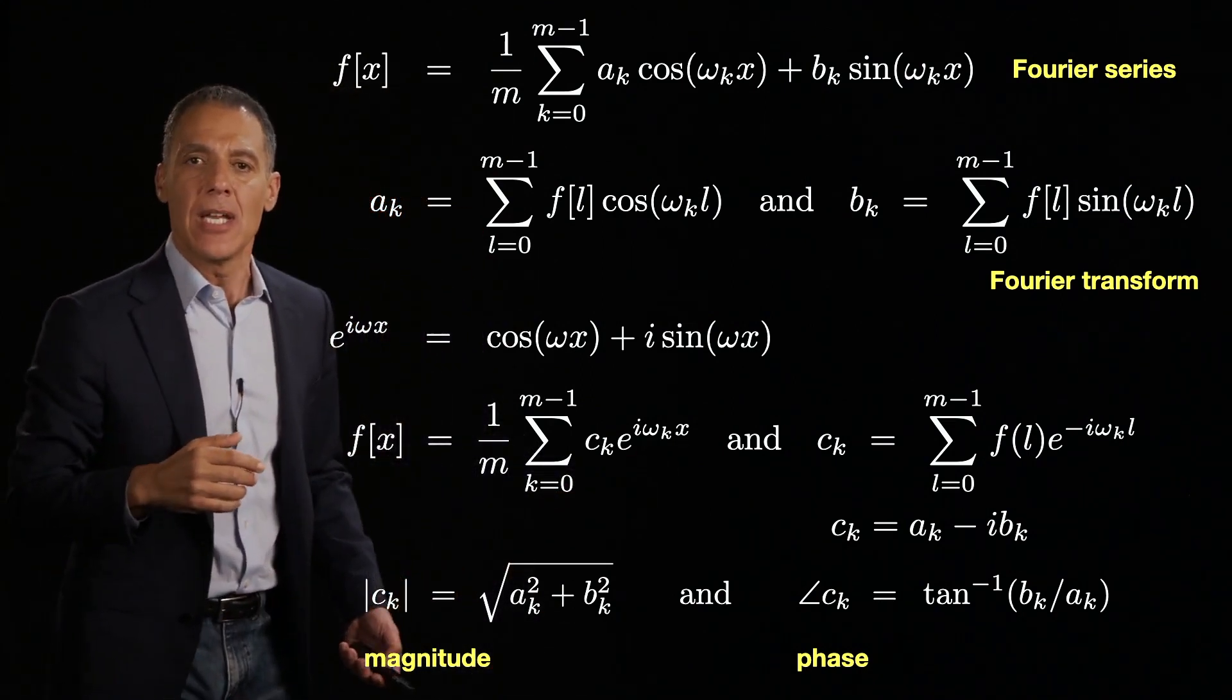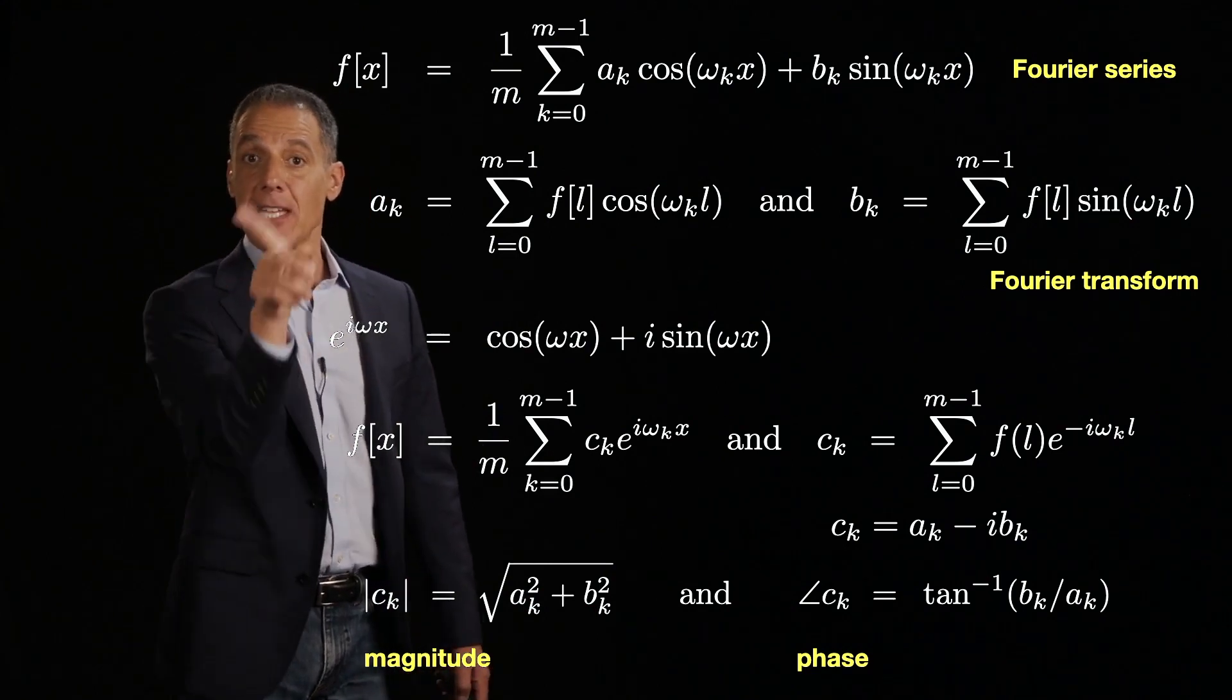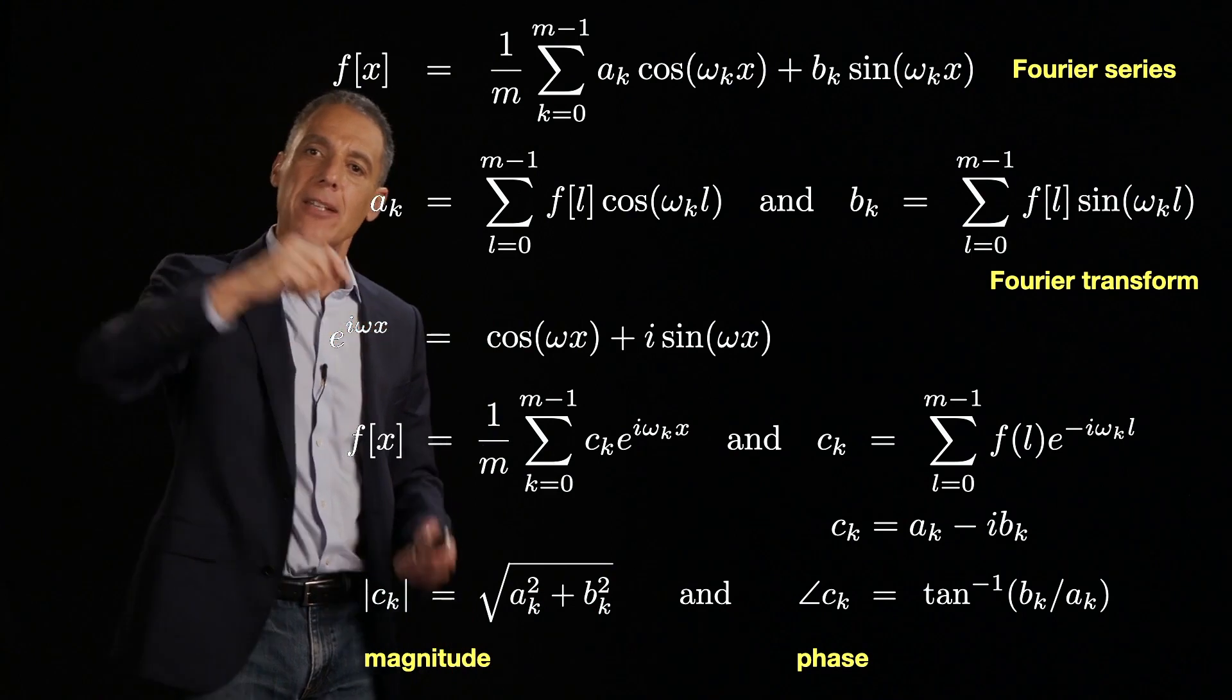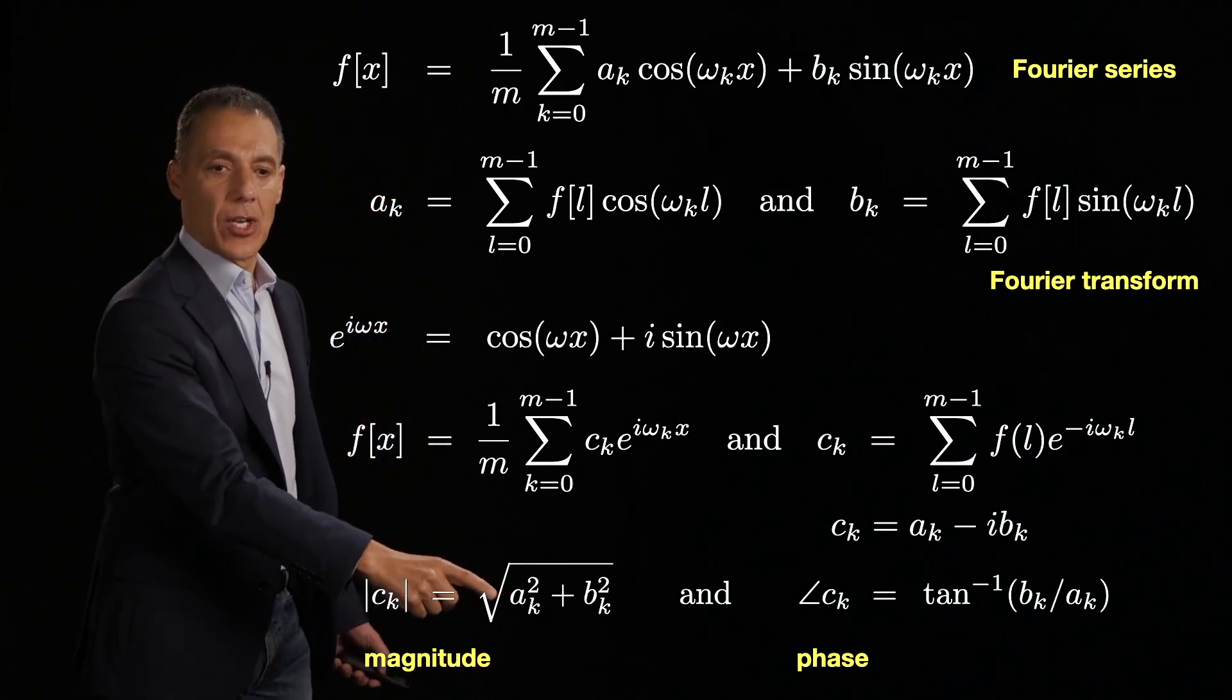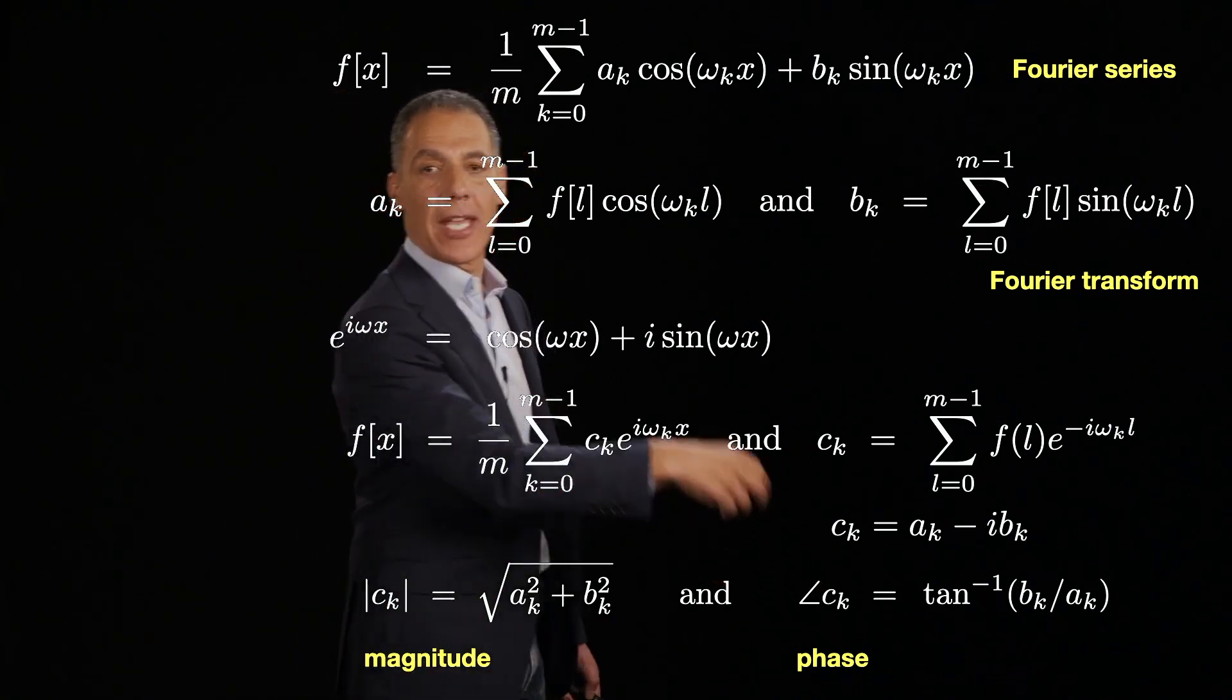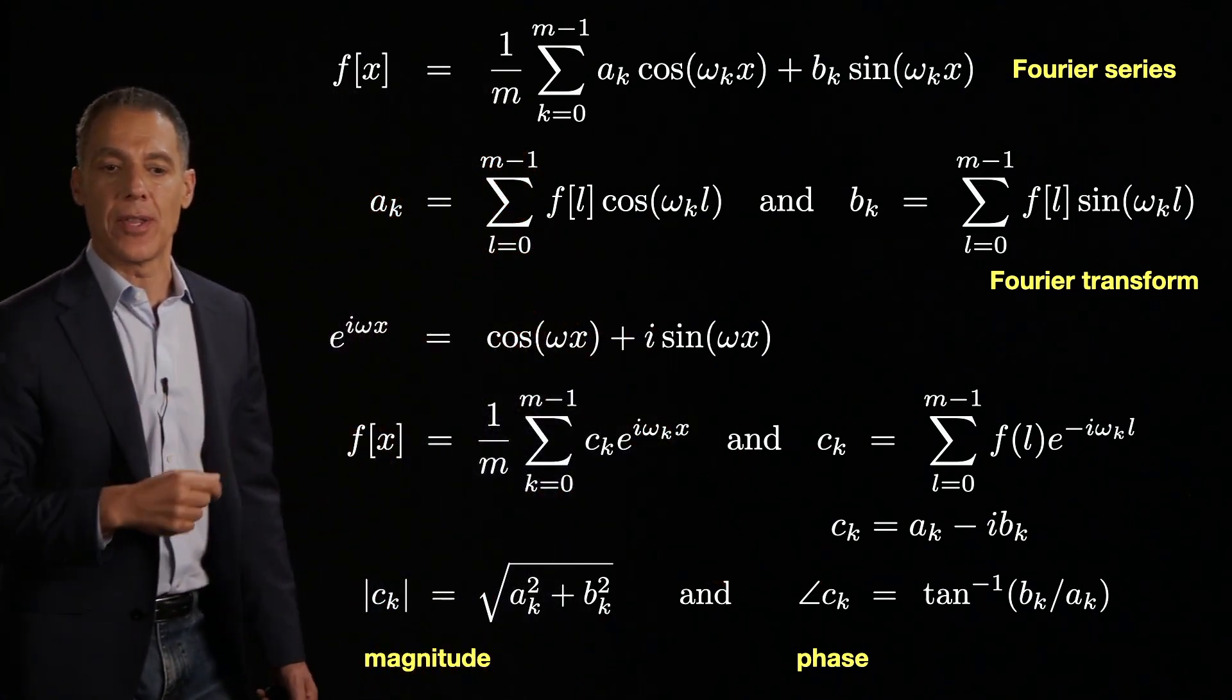And each c_k is just some vector in that space. Yeah, it's a complex space. So that vector has a phase, an orientation relative to the horizontal axis. And it has a magnitude. How long is it? And the magnitude, of course, is just the sum of the squares of the components. And the phase, of course, is just the arc tan of the b_k over the a_k.